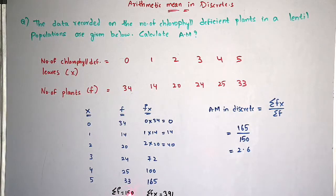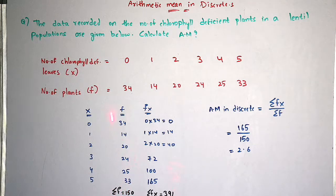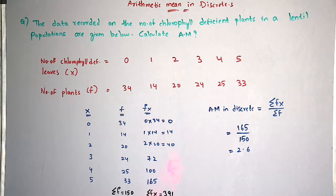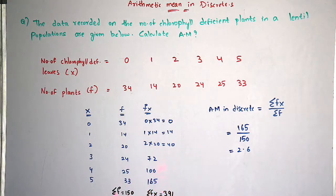Sigma f equals 150 — how you get 150: sigma indicates summation, so you add all frequencies: 34 plus 14 plus 20 plus 24 plus 25 plus 33 equals 150. Coming to sigma fx: you add all fx values — 0 plus 14 plus 40 plus 72 plus 100 plus 165 equals 391. So sigma fx equals 391. These are the two values needed.